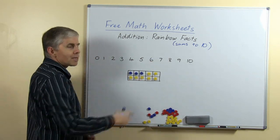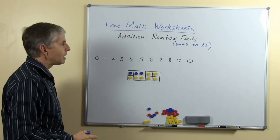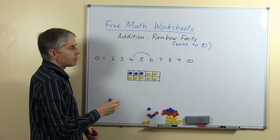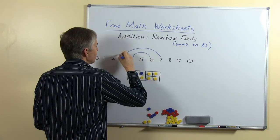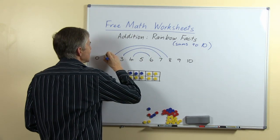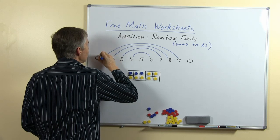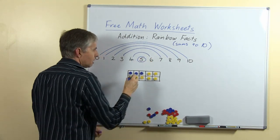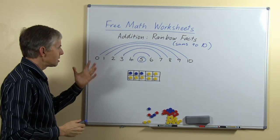If we write the numbers out from 0 to 10 in a line horizontally and then join together the pairs of numbers which add together to make 10, whose sum is 10, we can see that we get this nice rainbow sort of effect. 5 is on its own in the middle of course because of double 5.